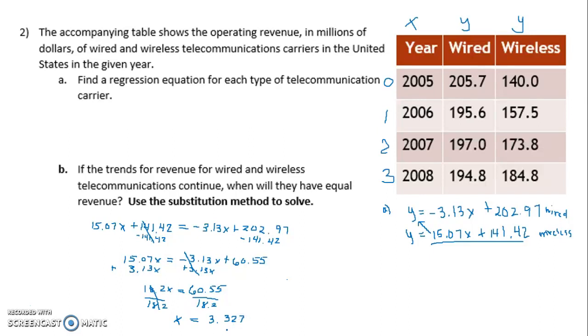All right. So I want to think about what did I just find? I found the year. So when I go back up here, when will they have equal revenue? Well, they will have equal revenue 3.3 years out, so actually during 2008. How do I know that? During the third year, and I know it's during the third year because of the 3.327.